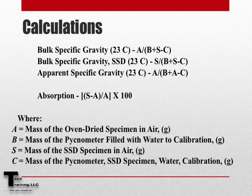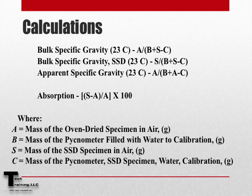When complete, we should have all the weights necessary to calculate bulk specific gravity on an oven dry basis, bulk specific gravity on a saturated surface dry basis, apparent specific gravity, and absorption. We should have four weights: A is the mass of the oven-dried specimen in air; B is the mass of the container filled with just water to the calibration point; S is the mass of the SSD specimen in air; and C is the mass of the container, the SSD specimen, and the water filled to the calibration point.